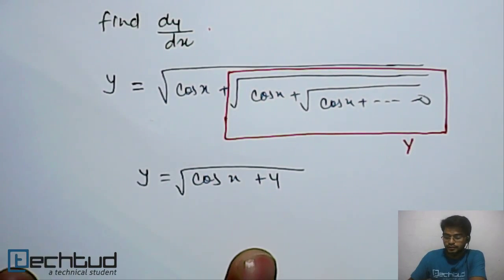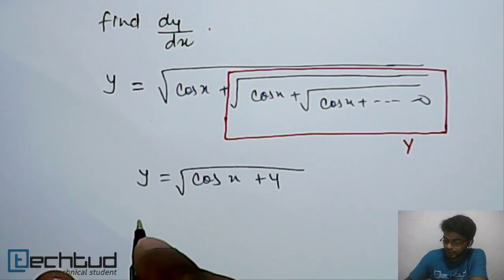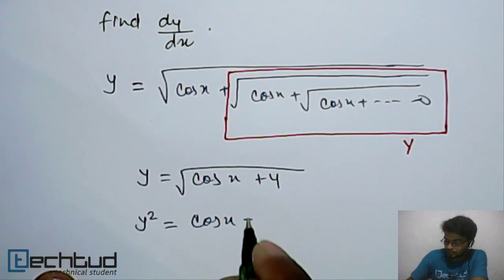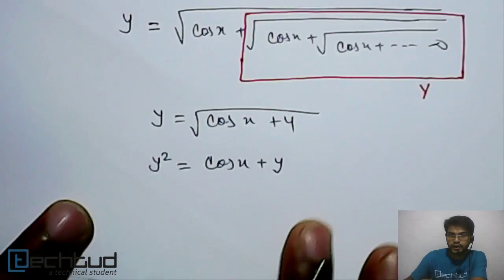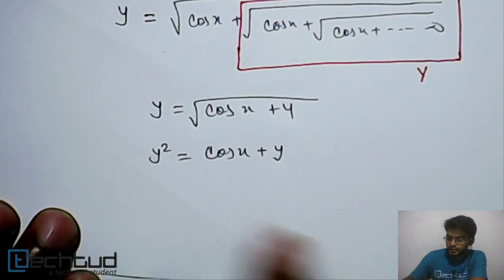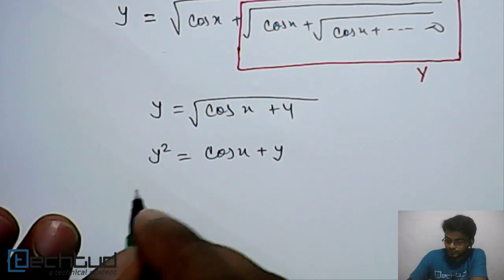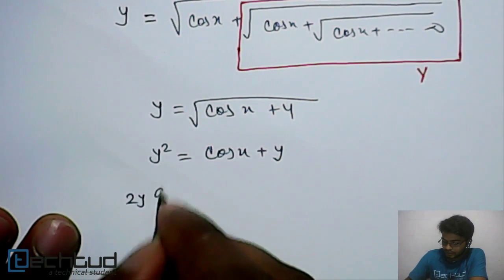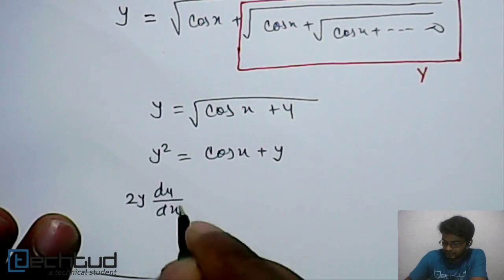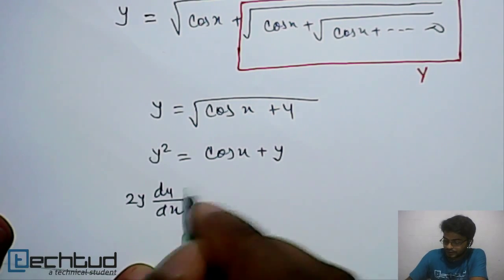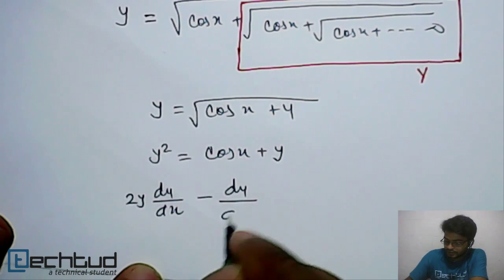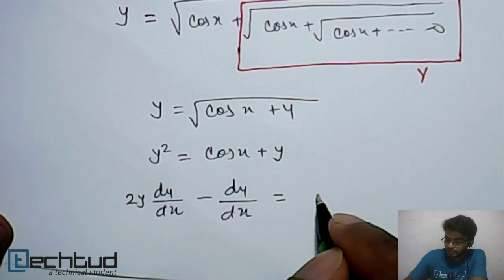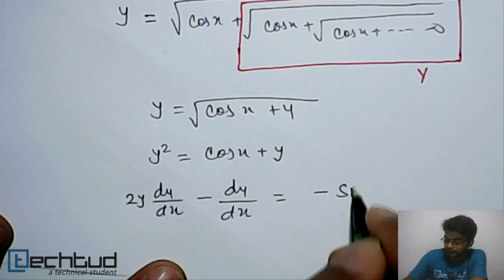Now we have to find dy/dx. So just square both sides. It will become y squared equals cos x plus y. Now find dy/dx. It will become 2y dy/dx. If you bring this y to this side, it will become minus dy/dx equal to dy/dx of cos x, which is minus sin x.